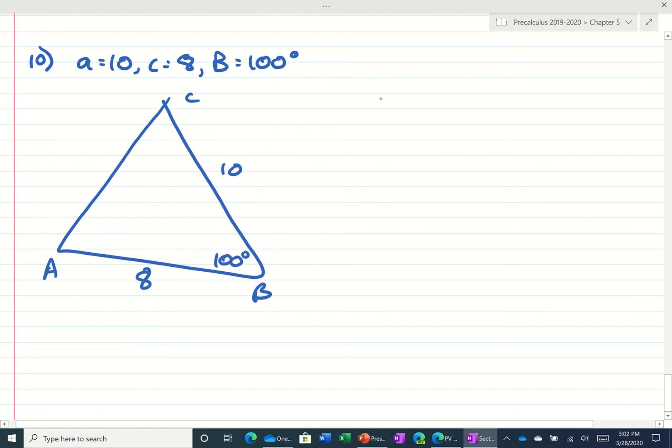So you can see that we don't have enough information to make a full law of sines fraction. So we're going to have to do law of cosines. And we only have angle B, so I'm going to use the formula with angle B in it. So that's B squared is equal to A squared plus C squared minus 2AC cosine of B.